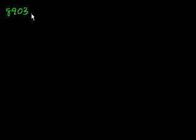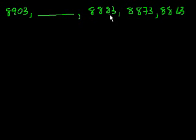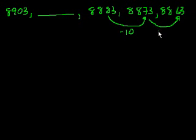Let's do one or two more to make sure we get all the concepts. We have 8,903, then a blank number, then 8,883, 8,873, 8,863. Looking at 8,883 to 8,873 to 8,863 — we decreased the tens place by 1 each time, so we're decreasing by 10 every time. The blank must be 10 more than 8,883, so we increase the tens place by 1 to get 8,893.